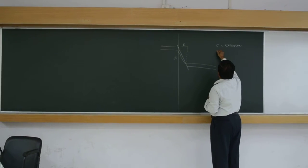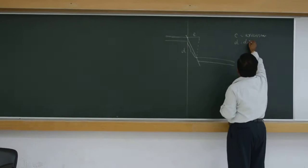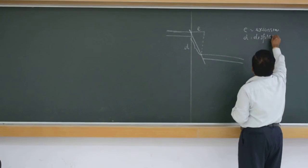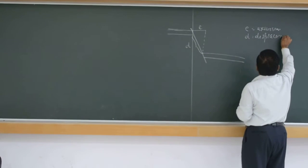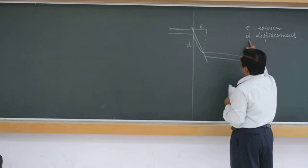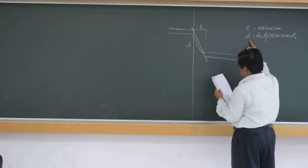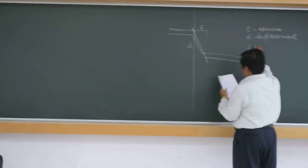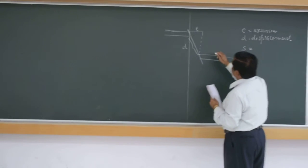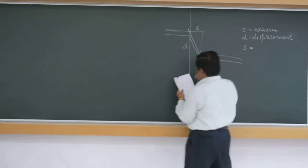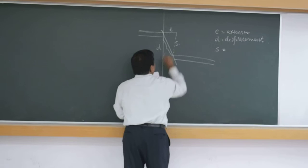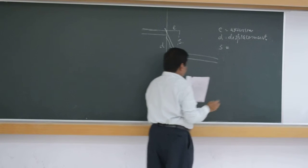D is the displacement. They are very easy things, but they convey very great meaning. D is the displacement. S squared is increasing. S is the omission.